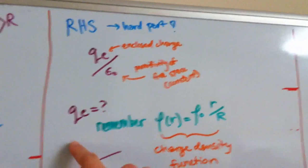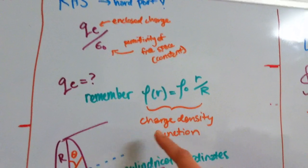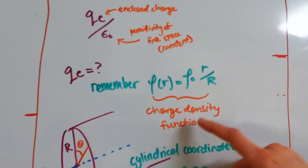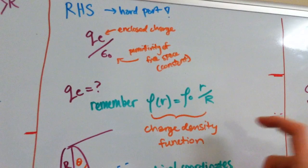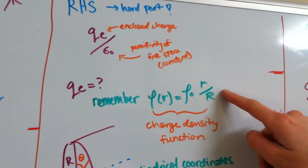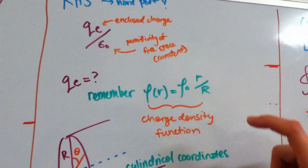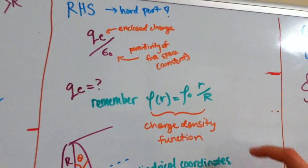So, remember, now we want to know what QE is. Remember, we have a charge density function here. This is not constant, so this means that the charge is not constant on this charge cylinder. In this case, it's a function of r, of how far away we are from the center of the cylinder. So,